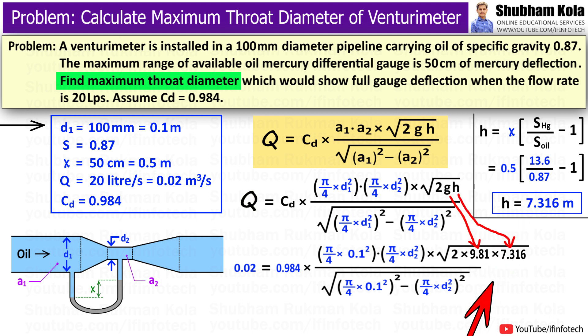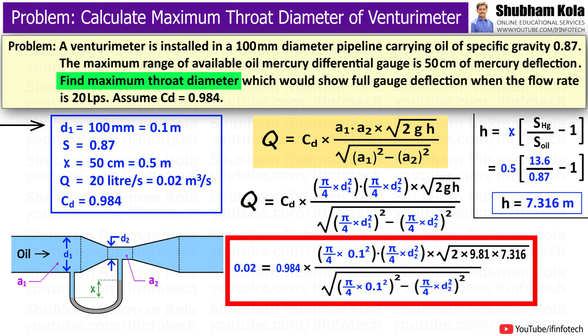Now I will put this calculated value of small h in discharge formula. So now we have found all the values in formula in order to calculate small d2, that is throat diameter of venturimeter.